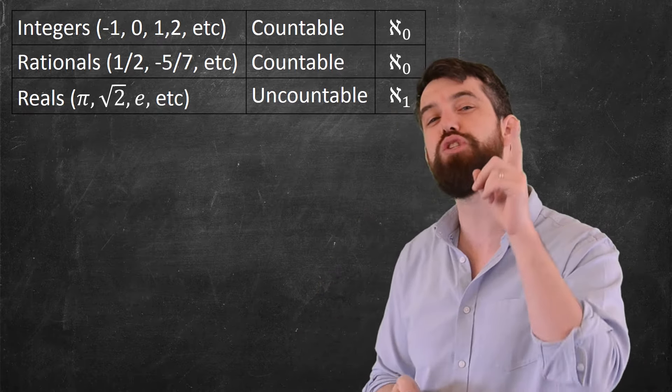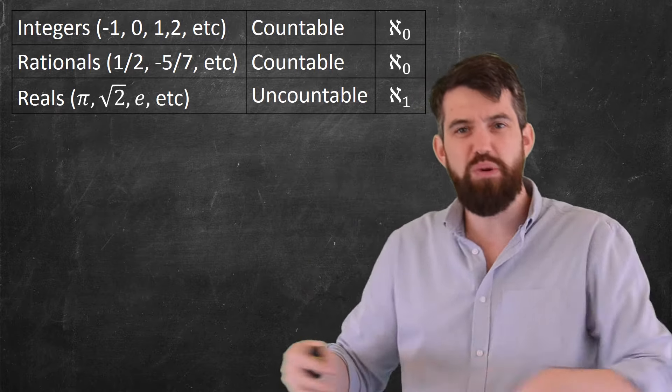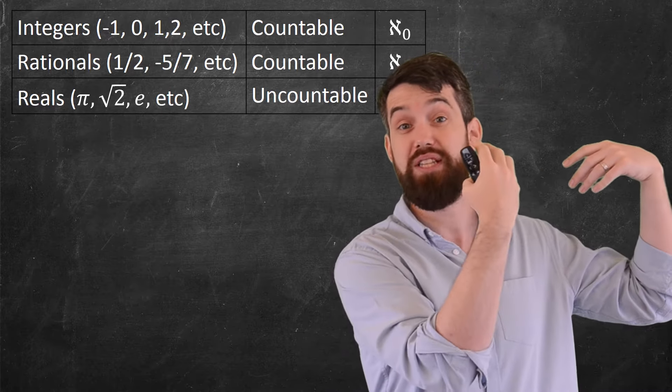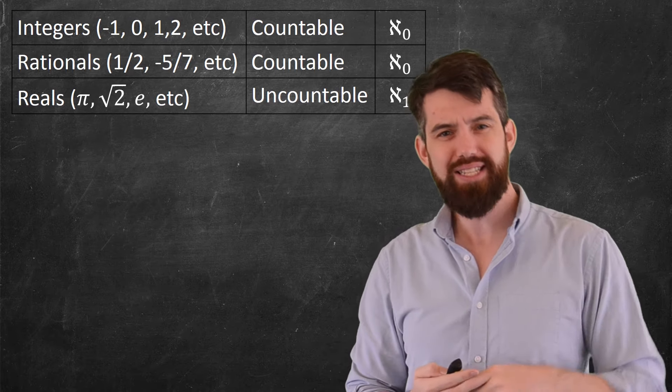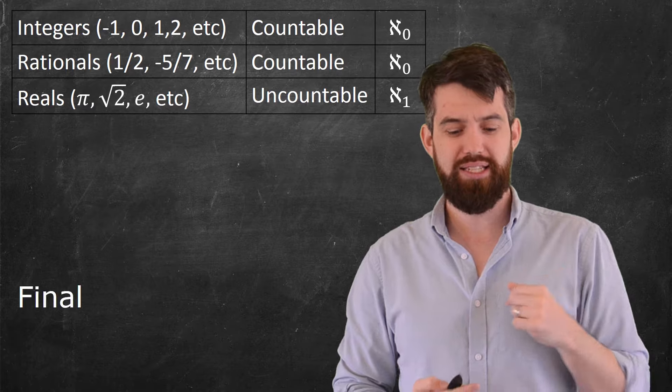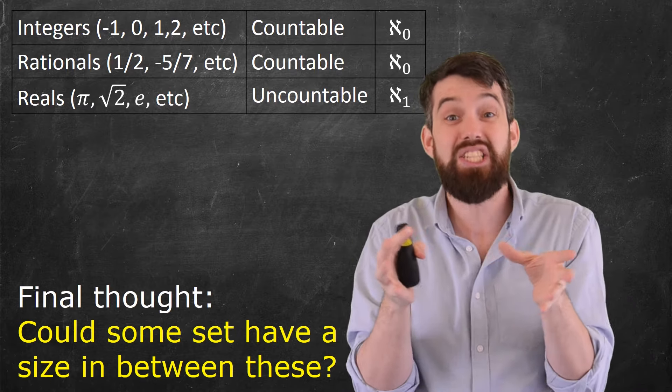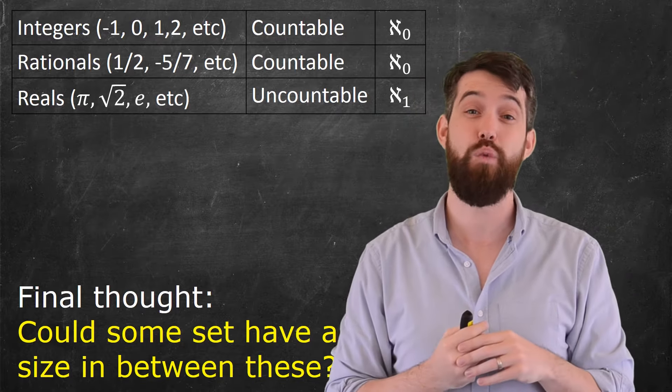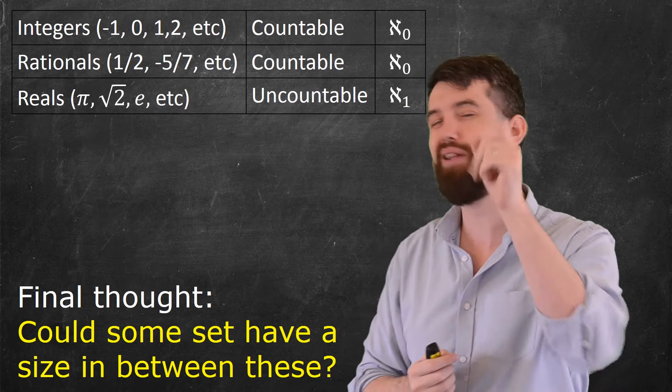And I want to leave you with just one final thought. We found this set that was countable, like the integers or the rational numbers. We found this set that was aleph 1 that was uncountable, for example, the real numbers. But is there a set that's in between these sizes? Is it possible that there could be some set that its size was snuck in between this aleph 0 and this aleph 1? And this, it turns out to be a very deep and challenging question, but I'm going to let you think about it.